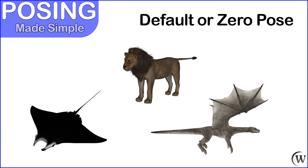We're going to cover items like the default or zero poses for different varieties of shapes and what they're called, and how to get back to the default state if you do mess around with a pose on a character.